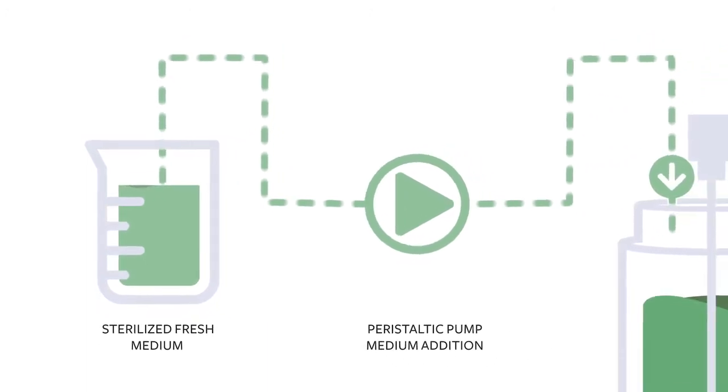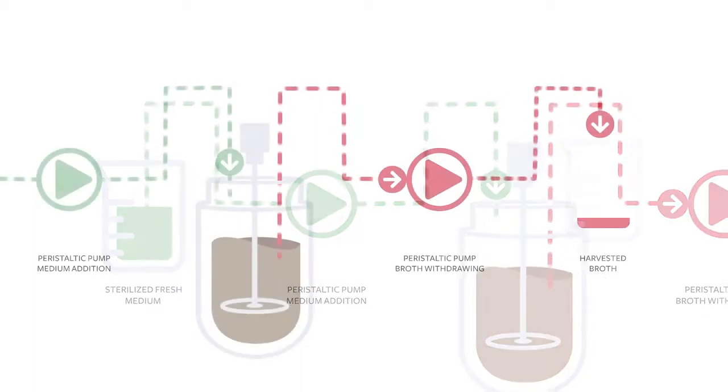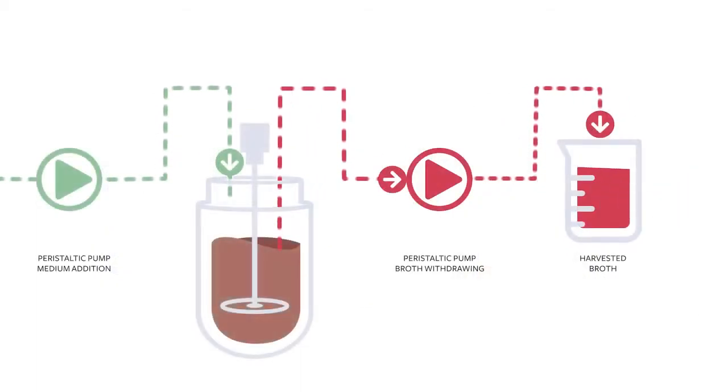In continuous process, you have an addition of the limiting substrate to the bioreactor, while the culture growth, which contains cells and metabolites, is withdrawn at the same time.